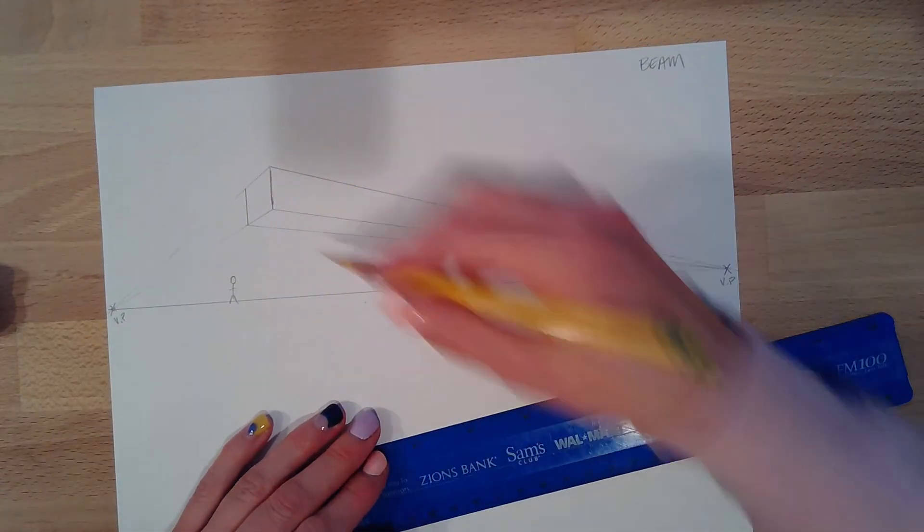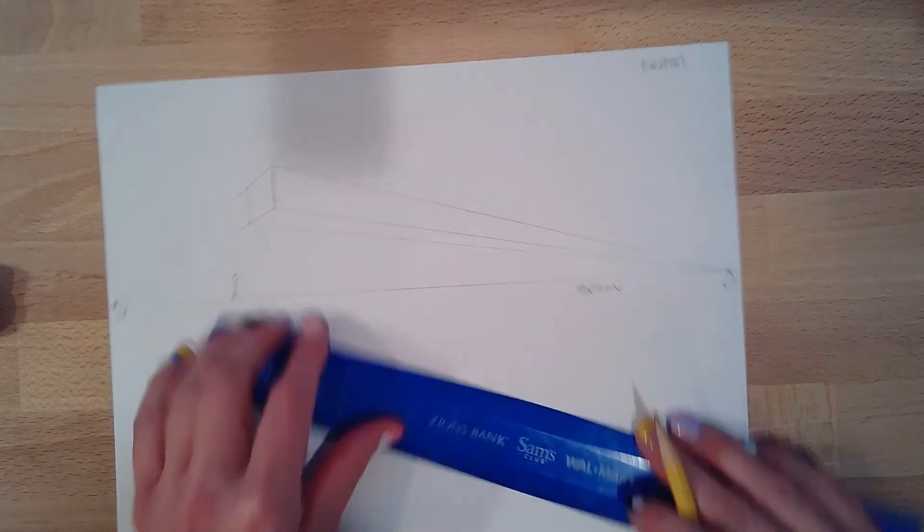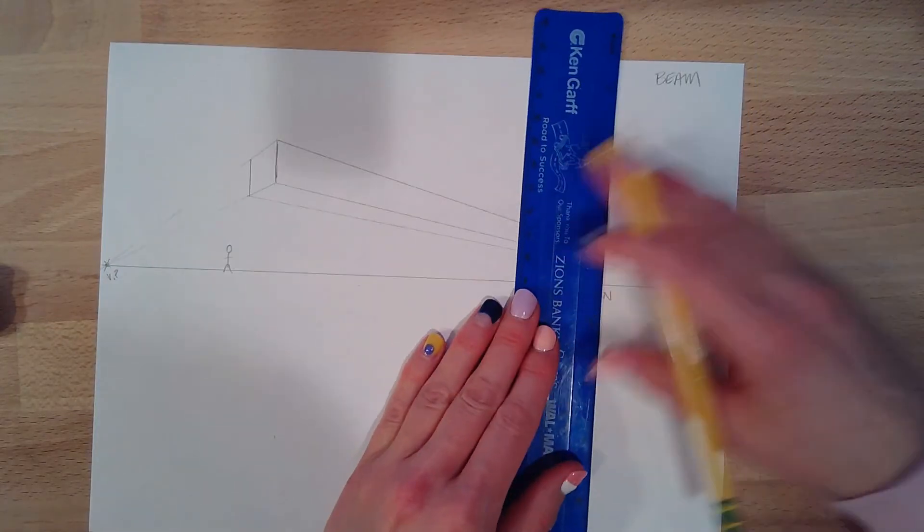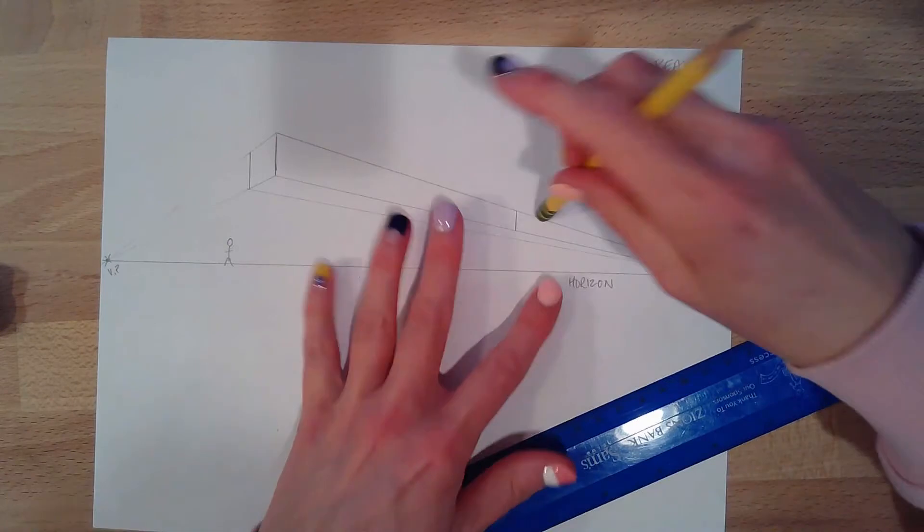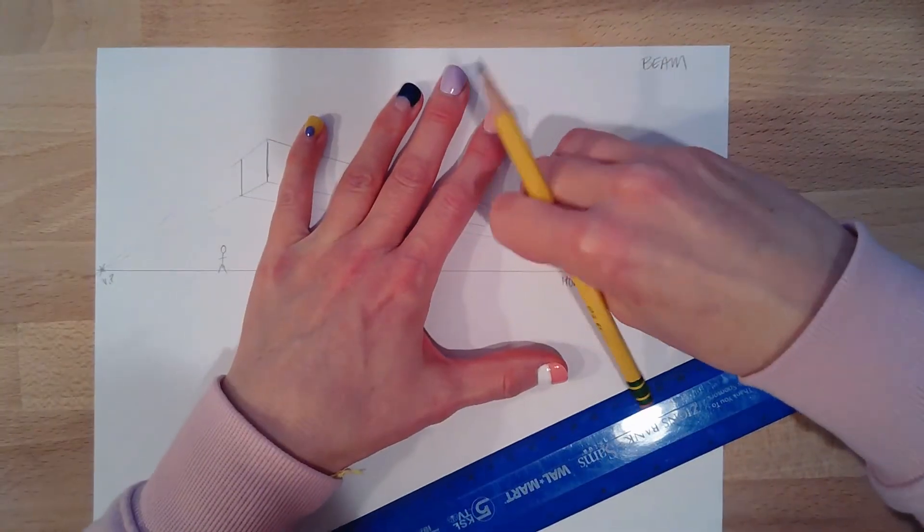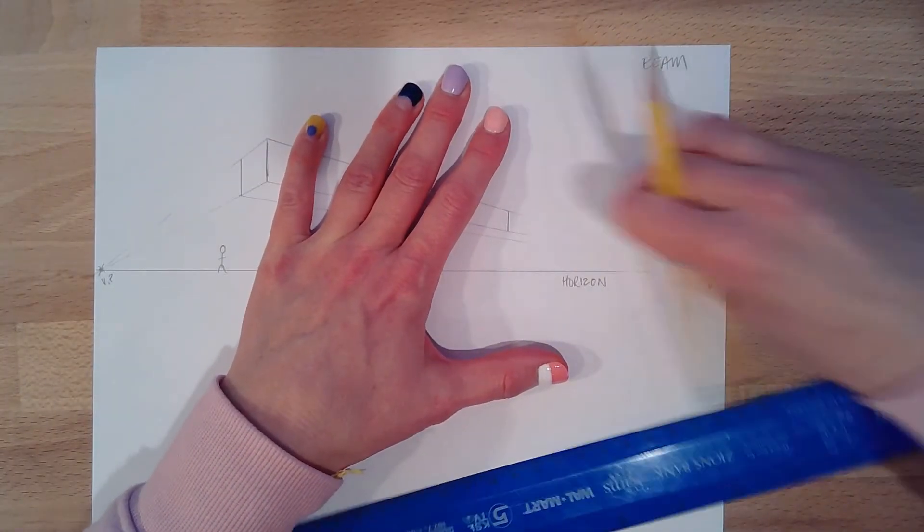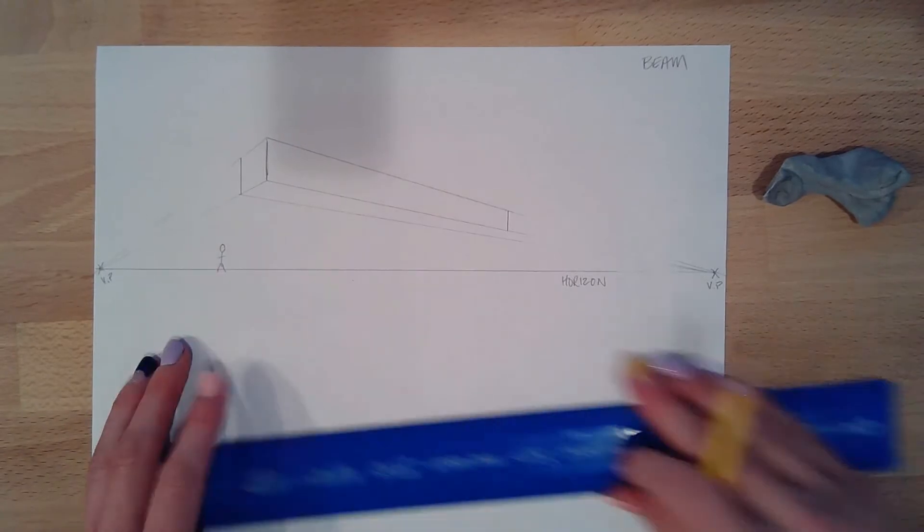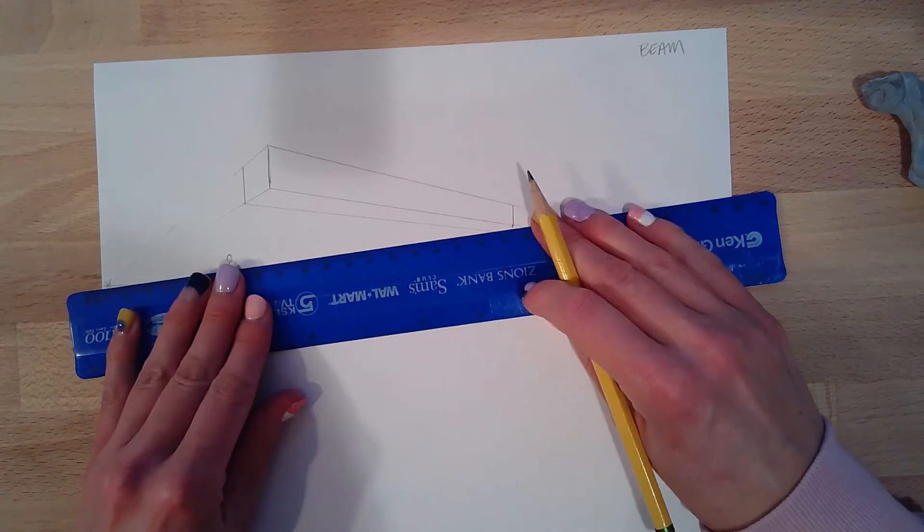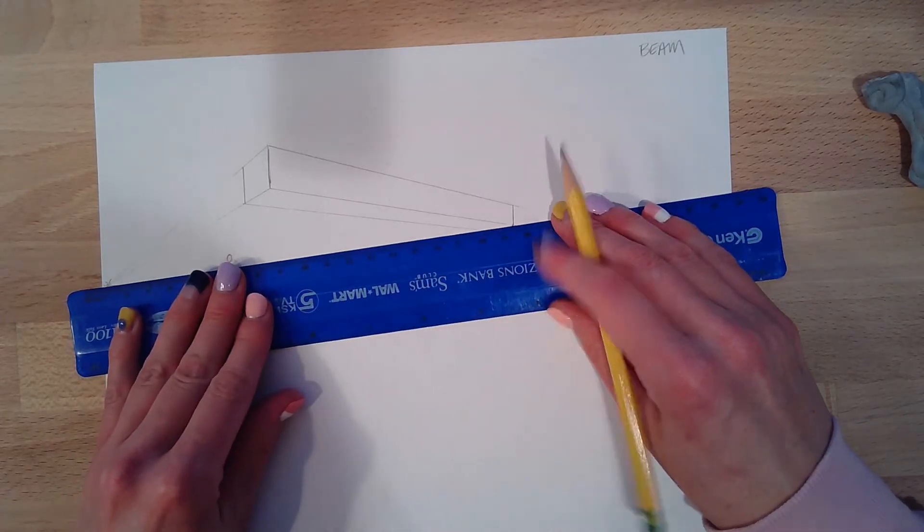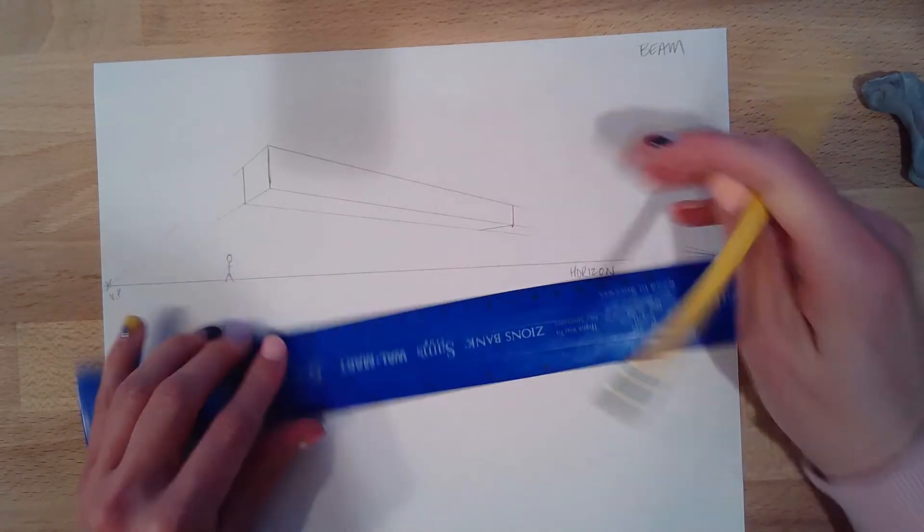Then I need to decide how long this beam is going to be. I feel like this beam is a big ol' beam. That's going to be the end of my beam. I can erase this line. Now all we have to do is cut the beam off. So it's just like the box. I would take the farthest point and go to the opposite vanishing point and we're going to end it.